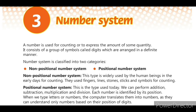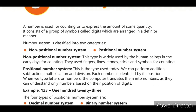The number system is classified into two categories: non-positional number system and positional number system. The non-positional number system was used by ancient people — they used fingers, lines, etc. for counting.